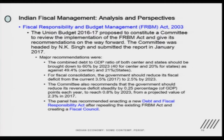For fiscal consolidation, the government should reduce its fiscal deficit from the current 3.5 percent, which was there in 2017, to 2.5 percent. This review committee suggested that instead of targeting 3 percent, which was the target in FRBM 1, now it is going to be 2.5 percent by 2023, considering that we are now in a completely different phase of the economy.